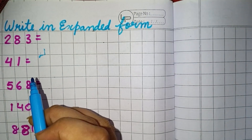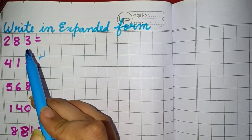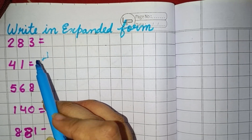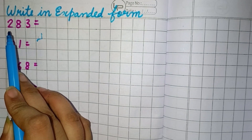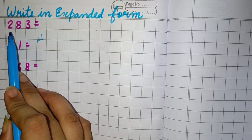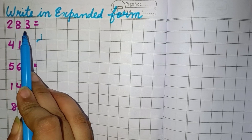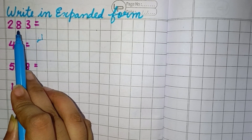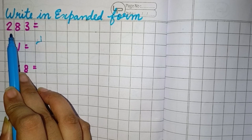The first number you can see is 283. So we have to write this number in expanded form. Firstly we will count which place each digit is in. So we can see 3 is in 1's place, 8 is in 10's place, and 2 is in 100's place.